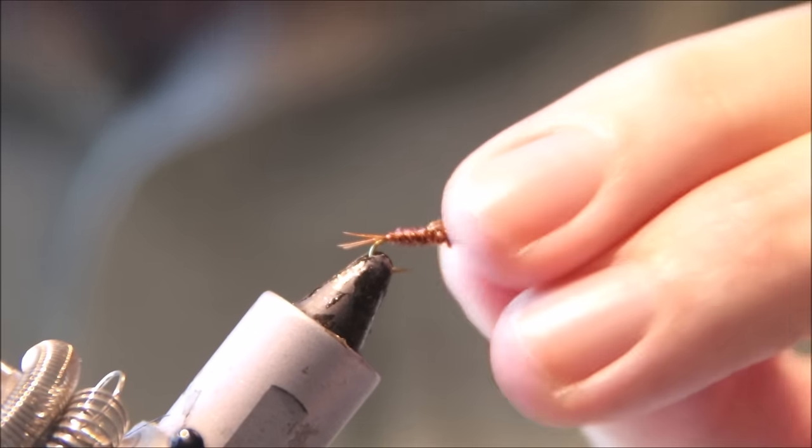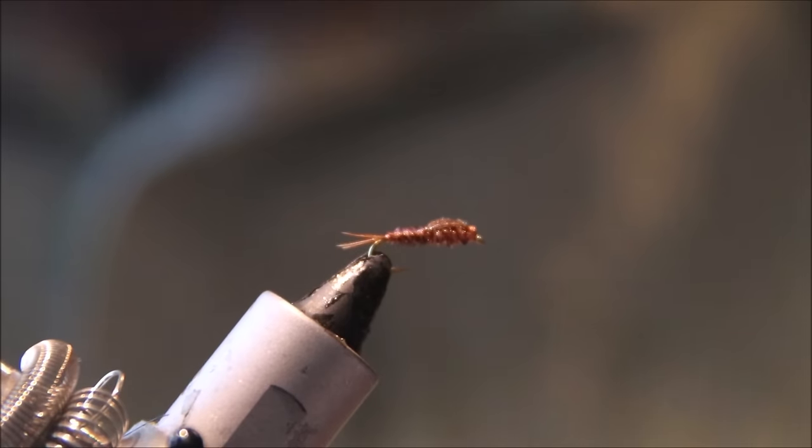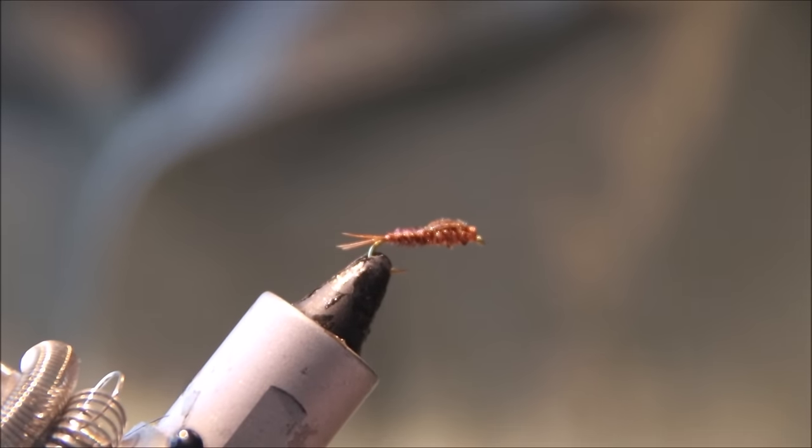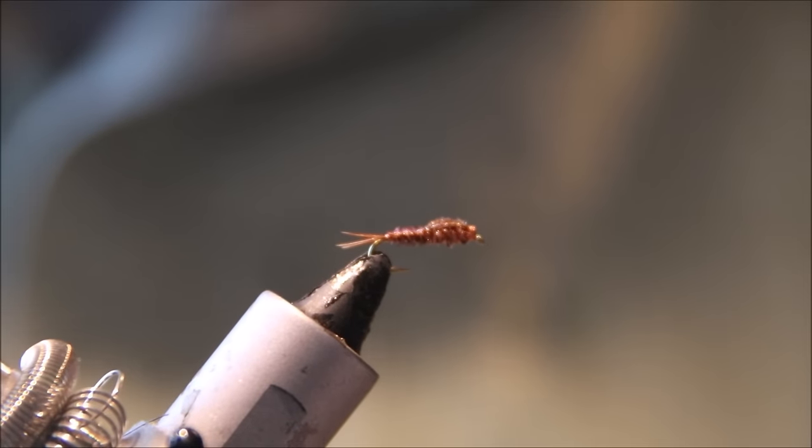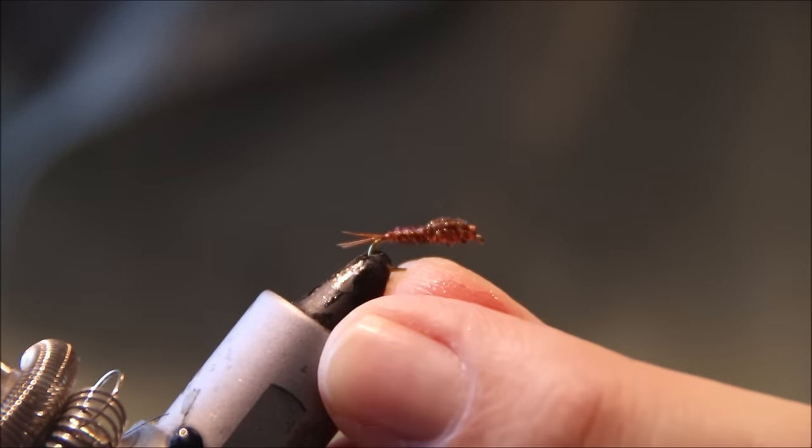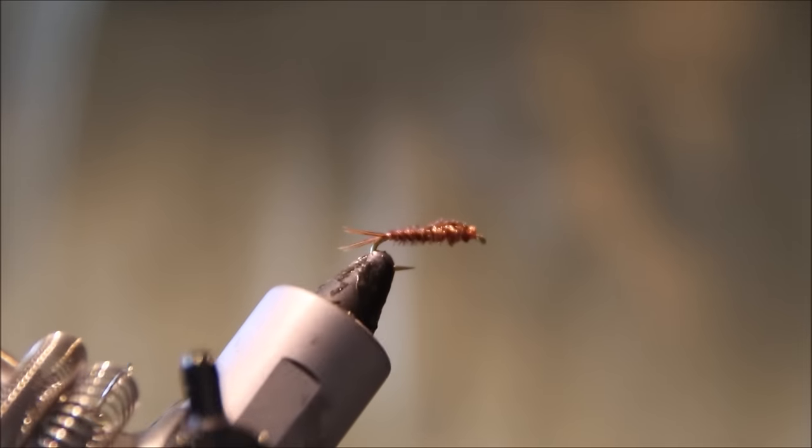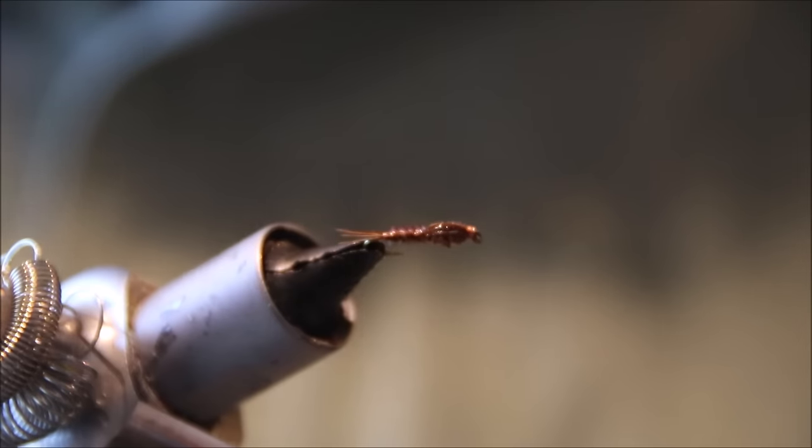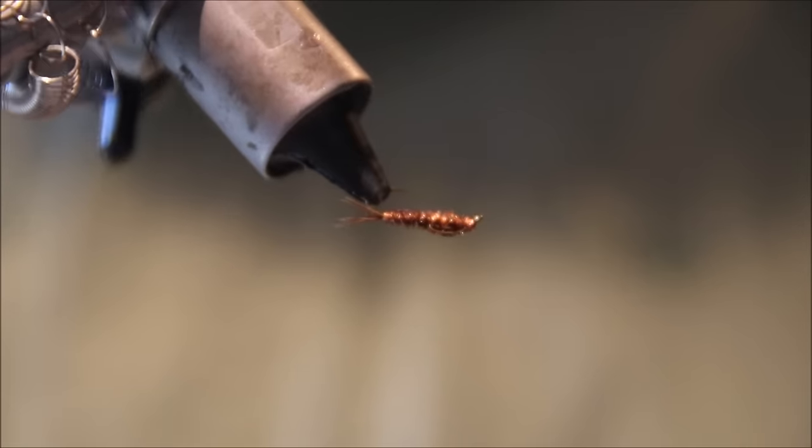And there you have it, Sawyer's pheasant tail nymph. Fairly simple little tie, a bit tricky at first, but when you get the hang of it, you can fairly knock them out quite quickly. So I hope that was useful. I hope you enjoyed it and will tie some of these up and go catch some fish with them. Thanks for watching and tight lines guys. Bye.